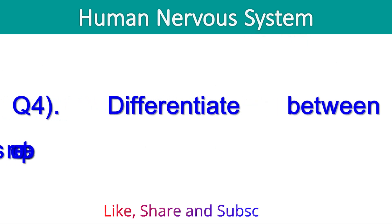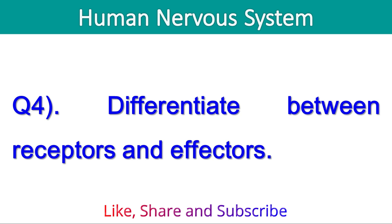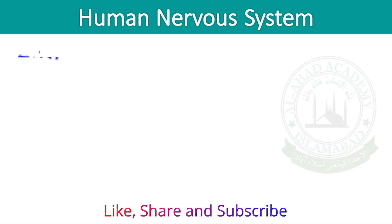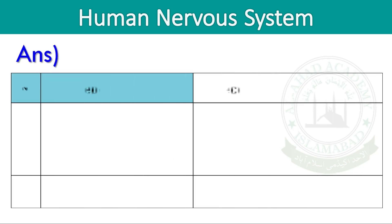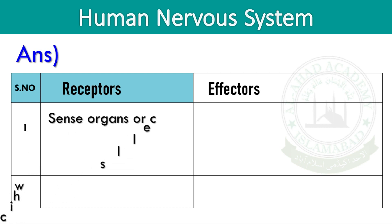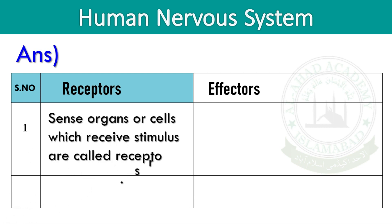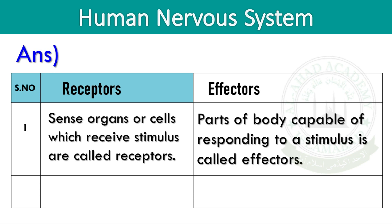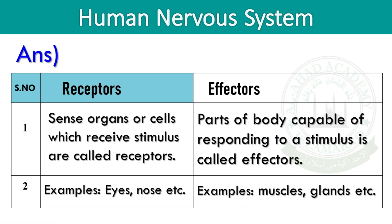Question number 4. Differentiate between receptors and effectors. Sense organs or cells which receive a stimulus are called receptors — examples: eyes, nose, etc. Parts of the body capable of responding to a stimulus are called effectors — examples: muscles, glands, etc.